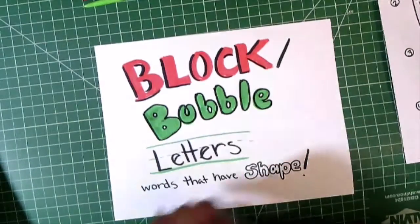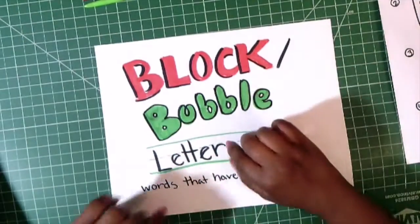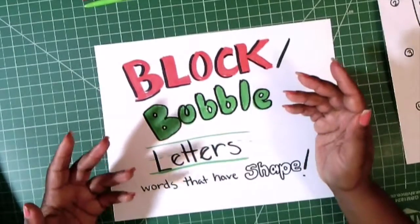Block letters have more flat sides. Bubble letters are a little bit rounder, but basically if you know how to make any letter in the alphabet, which most of you watching this video will already know how to do,